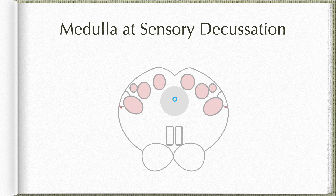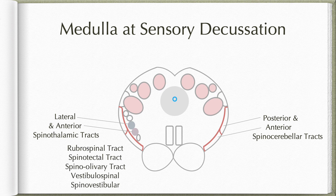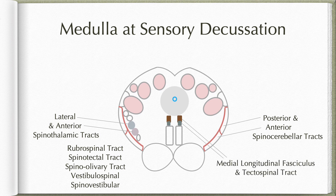Regarding the white matter in the medulla at this level: along the lateral margins, we find the posterior and anterior spinocerebellar tracts. On their inner aspects, we find the lateral and anterior spinothalamic tracts and various other ascending and descending tracts of the spinal cord — that is the rubrospinal and vestibulospinal tracts, as well as the spinotectal, spino-olivary, and spino-vestibular tracts. Between the central gray and the medial lemniscus on either side of the midline, we have the medial longitudinal fasciculus and tectospinal tracts, which maintain the same position throughout the rest of the brainstem.